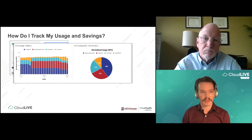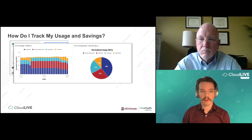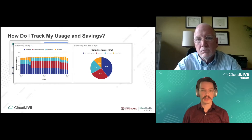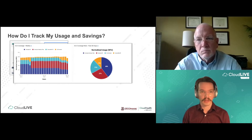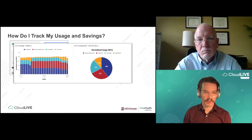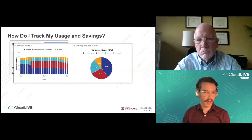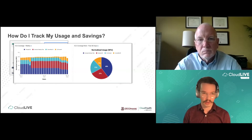On the top left, there's a weekly coverage report showing different types of RIs and savings plans. You can have a mixture of RIs and savings plans in your environment and they stack in a logical way. In this example, we're looking at standard RI, Compute Savings Plan, Convertible RI, and on-demand in the weekly chart. If you had an EC2 instance savings plan or spot instances, they would also show up in this chart.